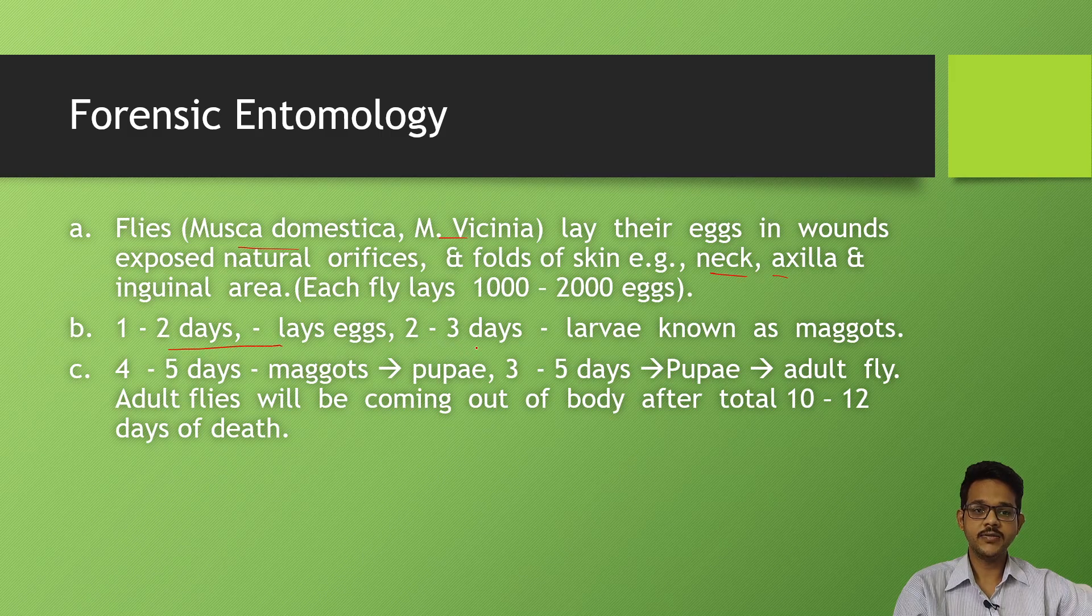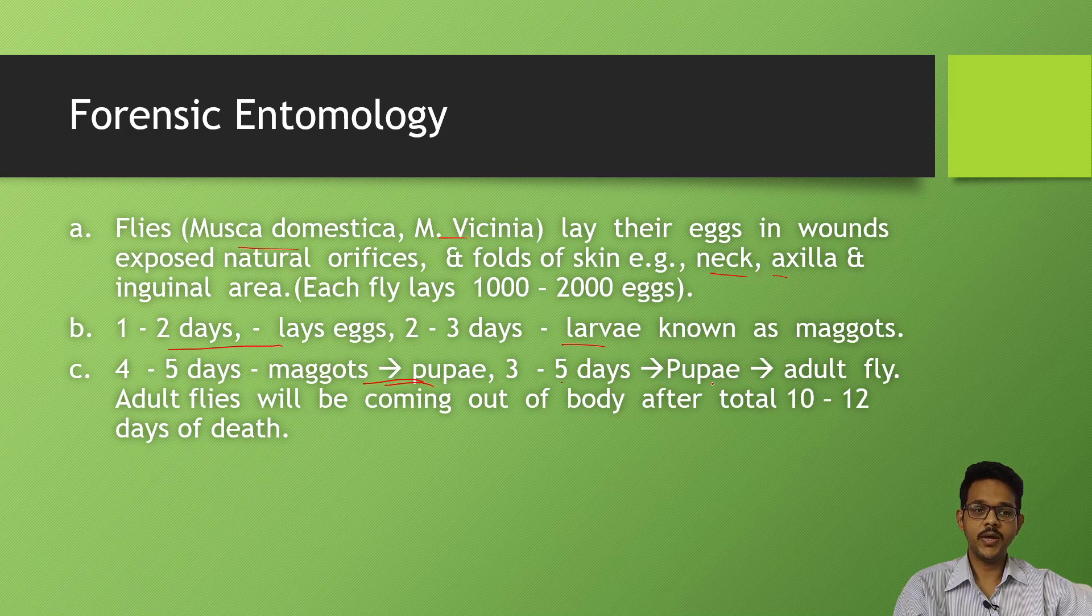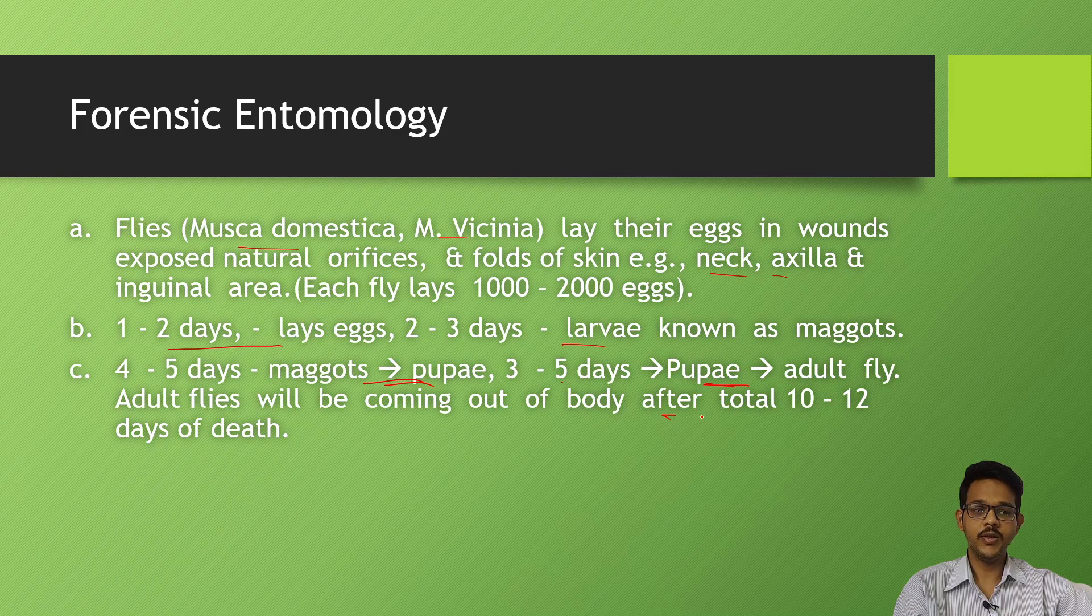The eggs hatch within one to two days and become larvae, that is maggots. After four to five days, these become pupae, and in three to five days pupae become adult flies. In total, it takes about ten to twelve days for the complete cycle of the insects. Based on the stage of the larvae, that is maggots, you can roughly estimate the time since death.